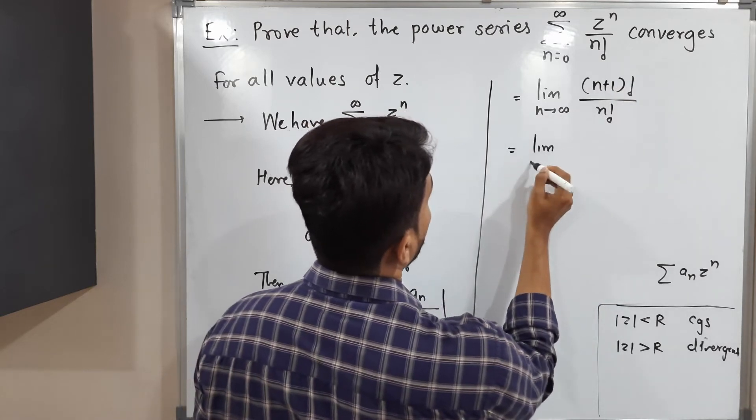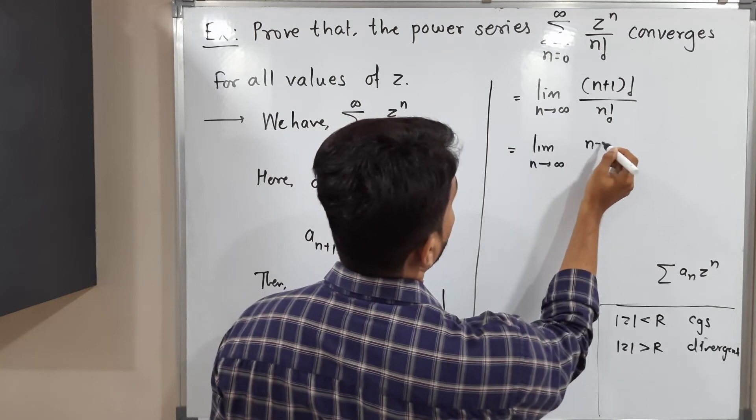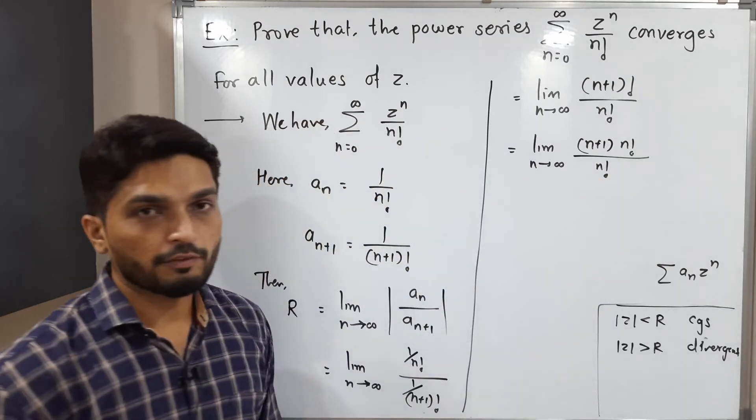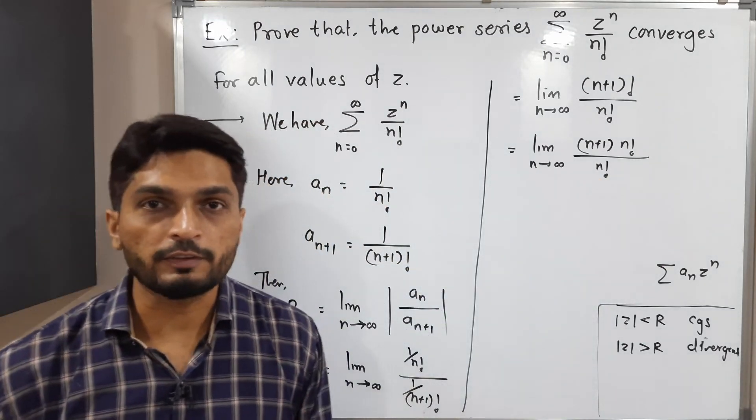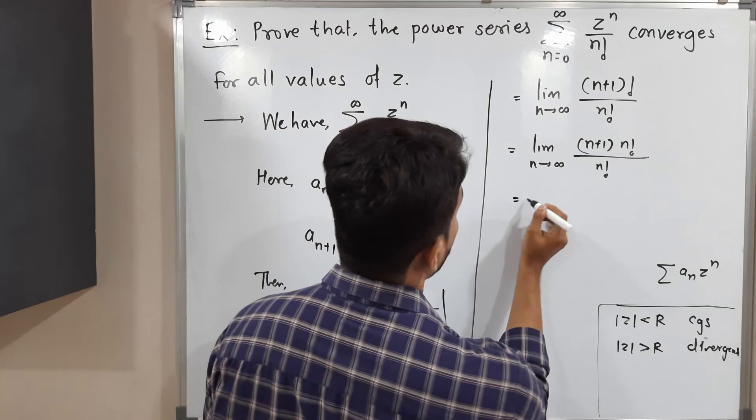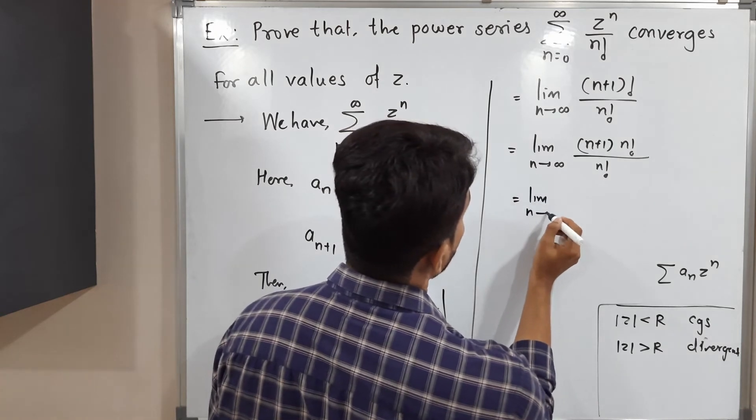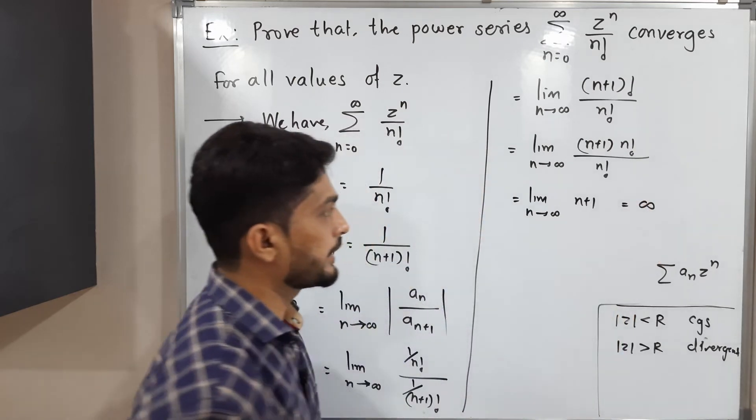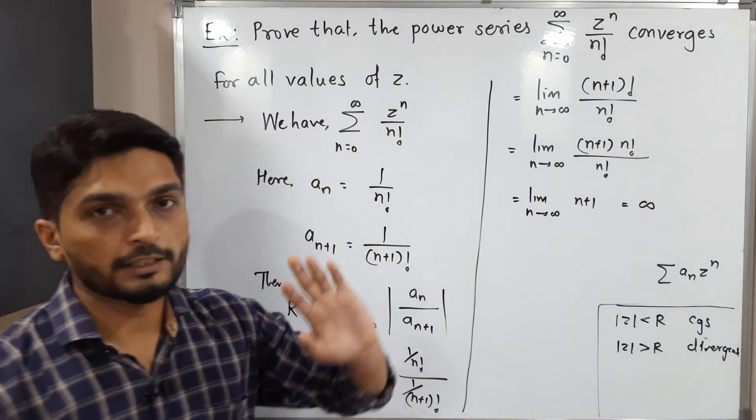You know that n plus 1 factorial can be expressed as n plus 1 into n factorial. So n factorial will get cancelled. So this is equal to limit n tends to infinity n plus 1. If you apply the limit you will have the value infinity.